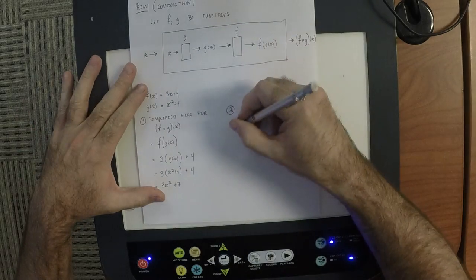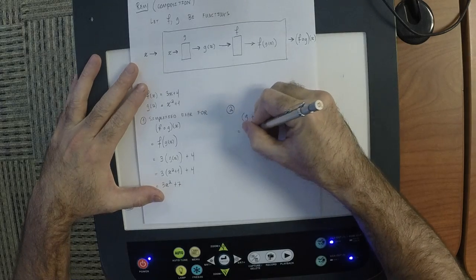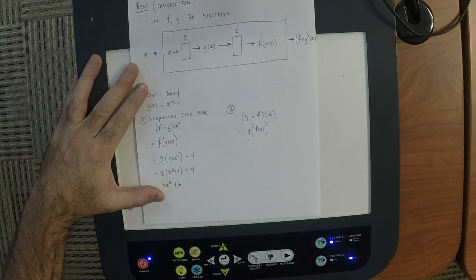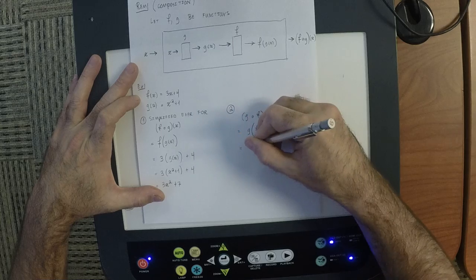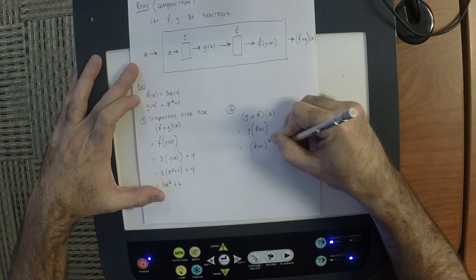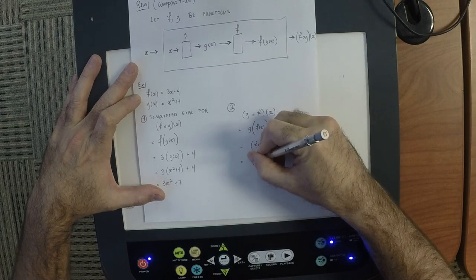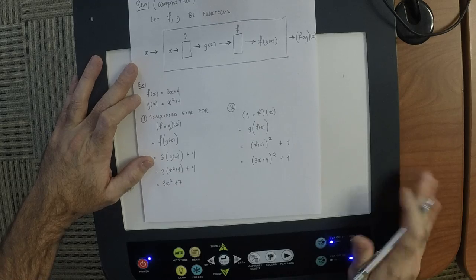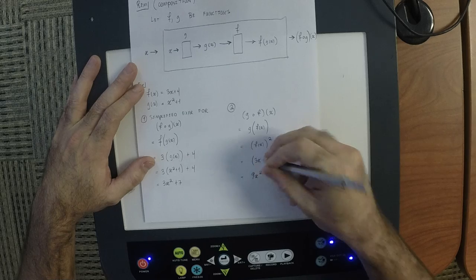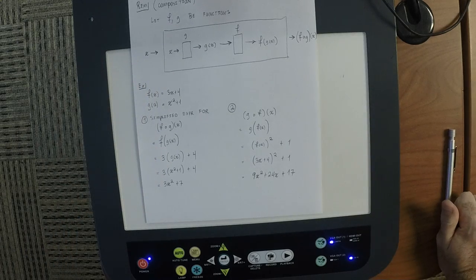For g composed with f at x: write it as g of f of x. What does g do with its input? Input squared then add 1. So it would be (f of x) squared plus 1, which is (3x + 4) squared plus 1. Multiply that out and collect like terms: 9x² + 24x + 16 + 1 = 9x² + 24x + 17.